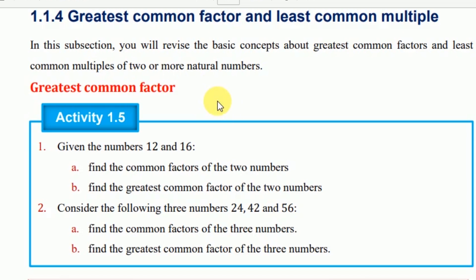The greatest common factor and the least common multiple can be found in unit one, primary case, unit one.